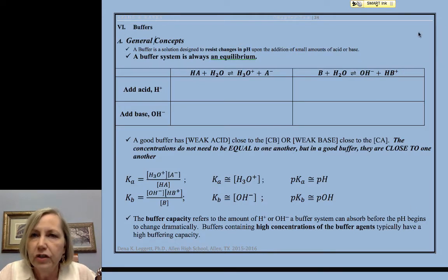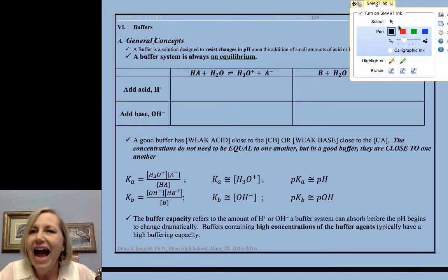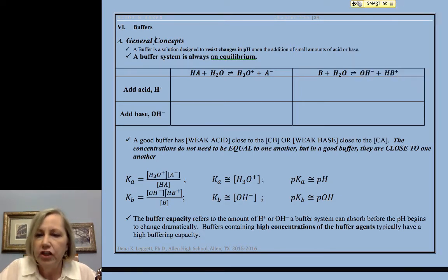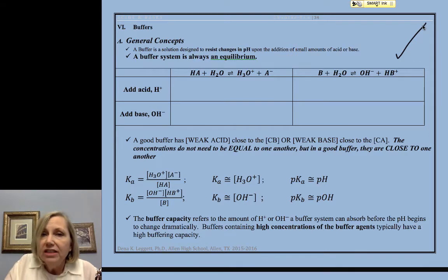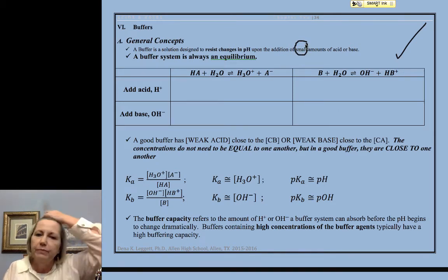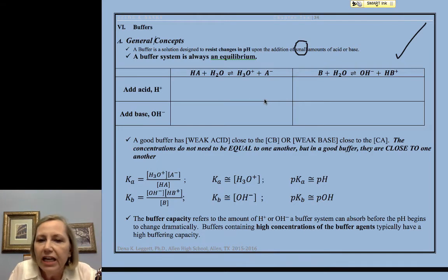So buffers, the buffering capacity deals with how much of each of these I can add. So we saw the reactions for adding it, but how much? Define small, in other words. Define small. How much acid or how much base can we add?